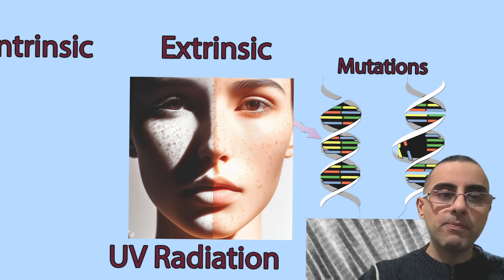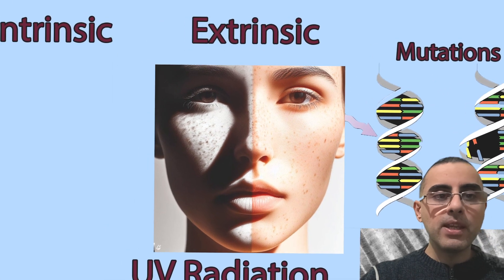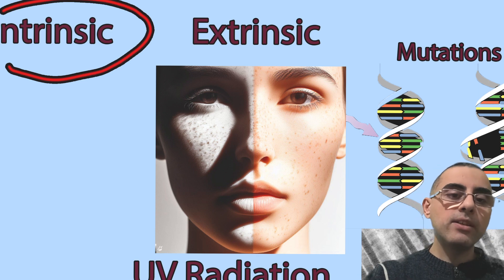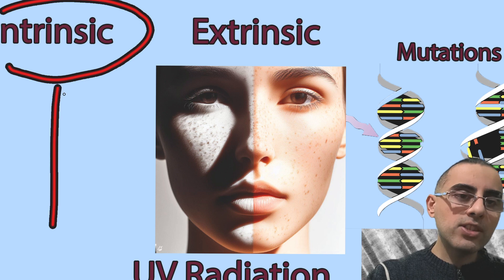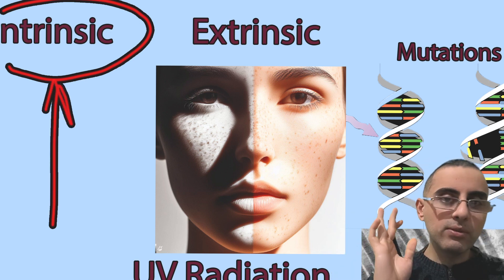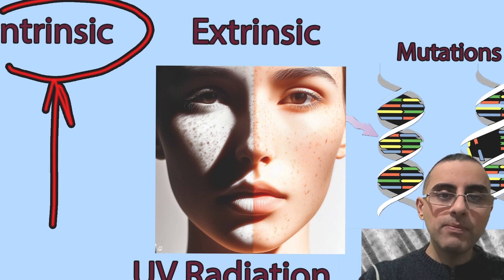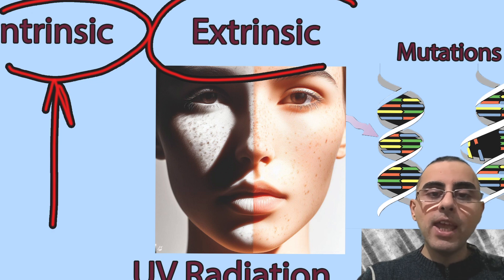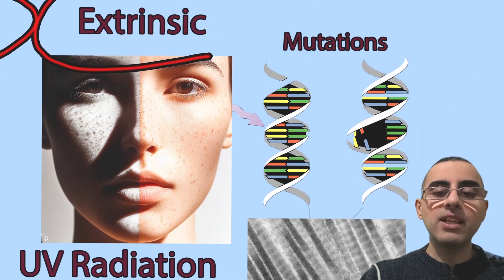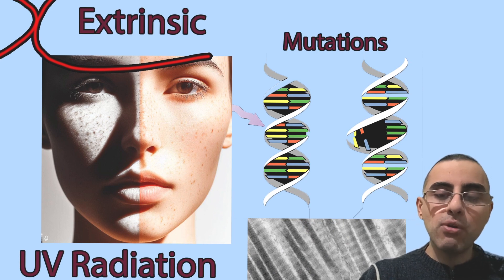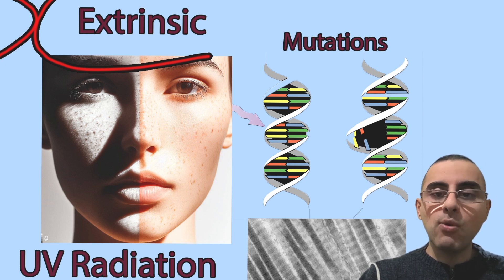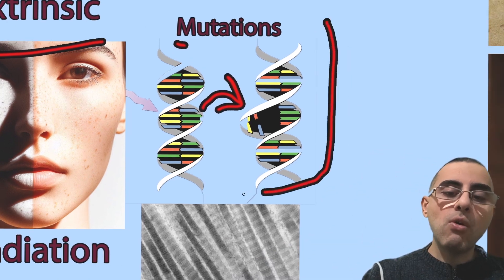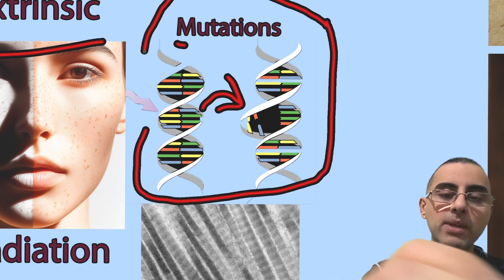When discussing what causes skin aging, we have intrinsic factors and extrinsic factors. Intrinsic factors are genetic — we can't do anything about them, as many factors are predefined. So, no worries — accept what you have. We can take care of extrinsic factors. Among extrinsic factors, UV radiation or sun exposure is most important because sun rays directly damage our DNA, causing mutations that increase the risk of cancers.